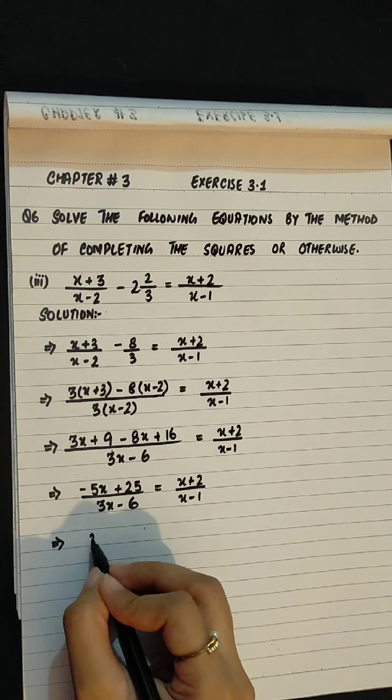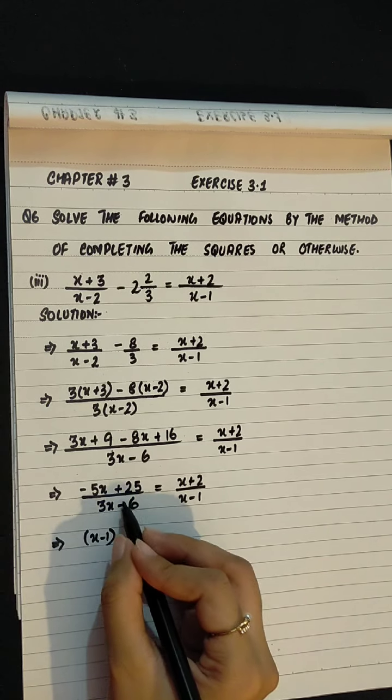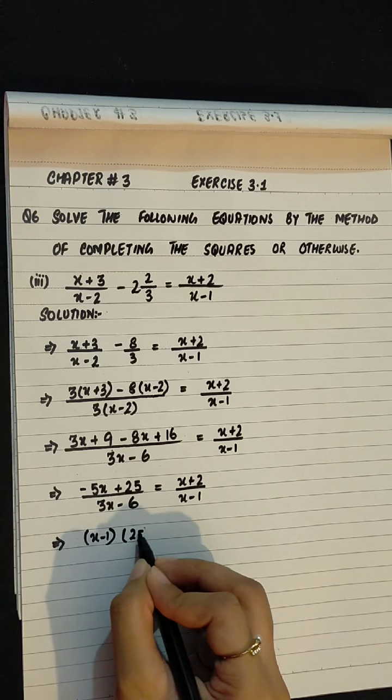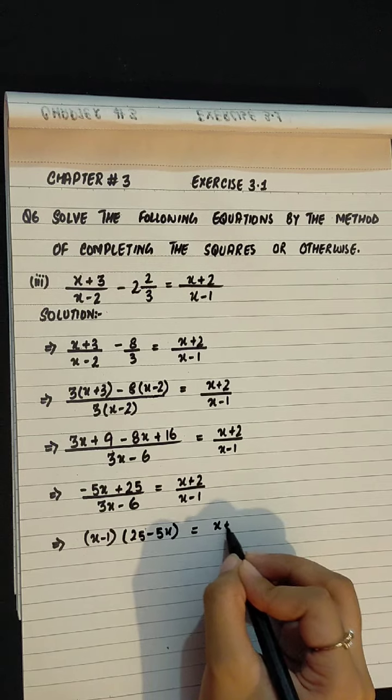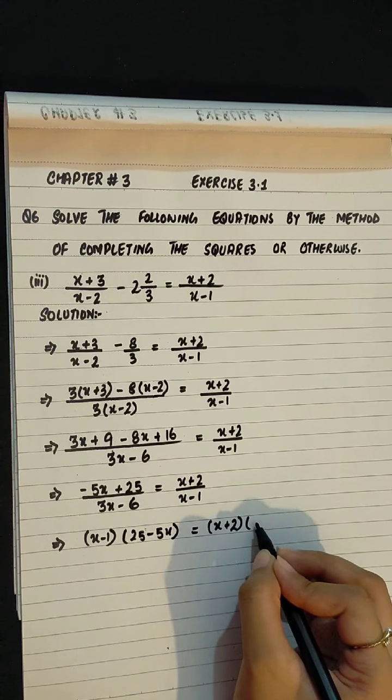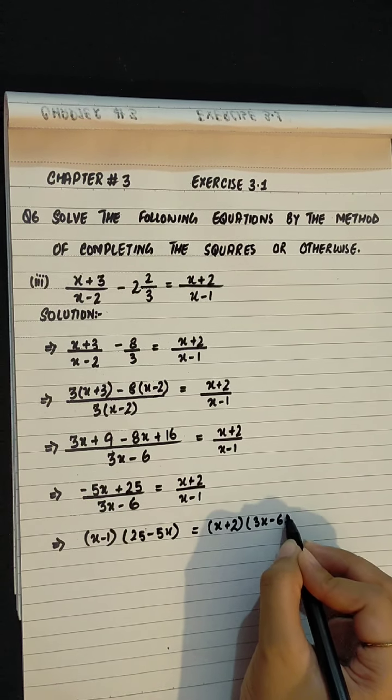Cross multiply. x minus 1. We can write this. 25 minus 5x equals to x plus 2 into 3x minus 6.